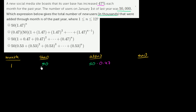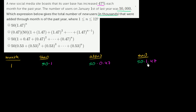So how many do we end with? 50 plus 50 times 0.47. That's going to be 50 times 1.47. If that isn't clear, just think: 50 times 1 plus 50 times 0.47 equals 50 times (1 + 0.47), or 1.47.